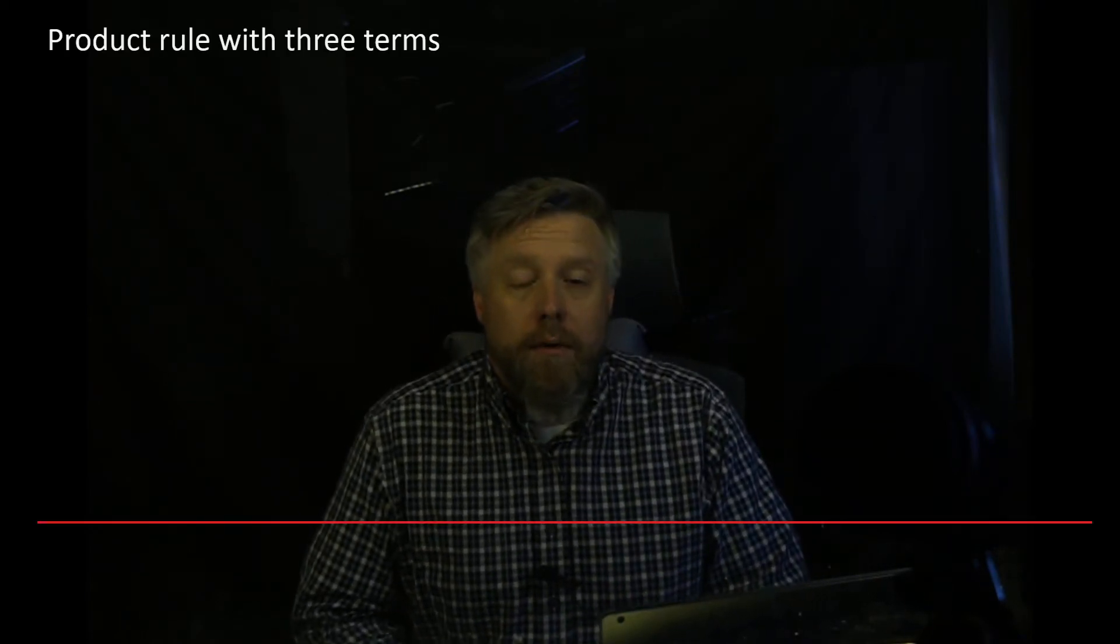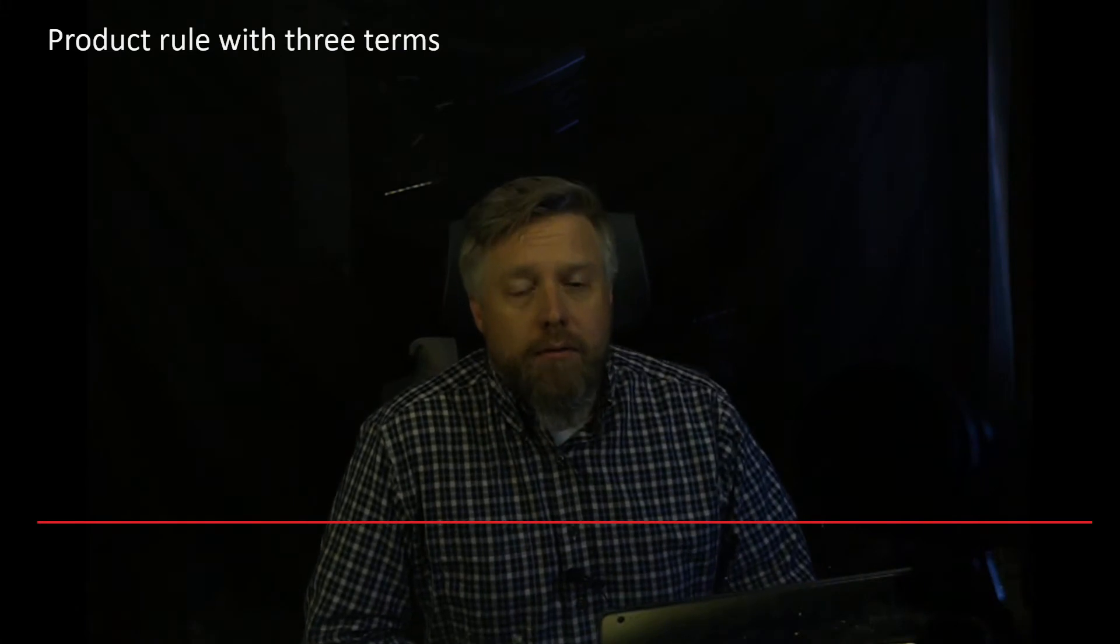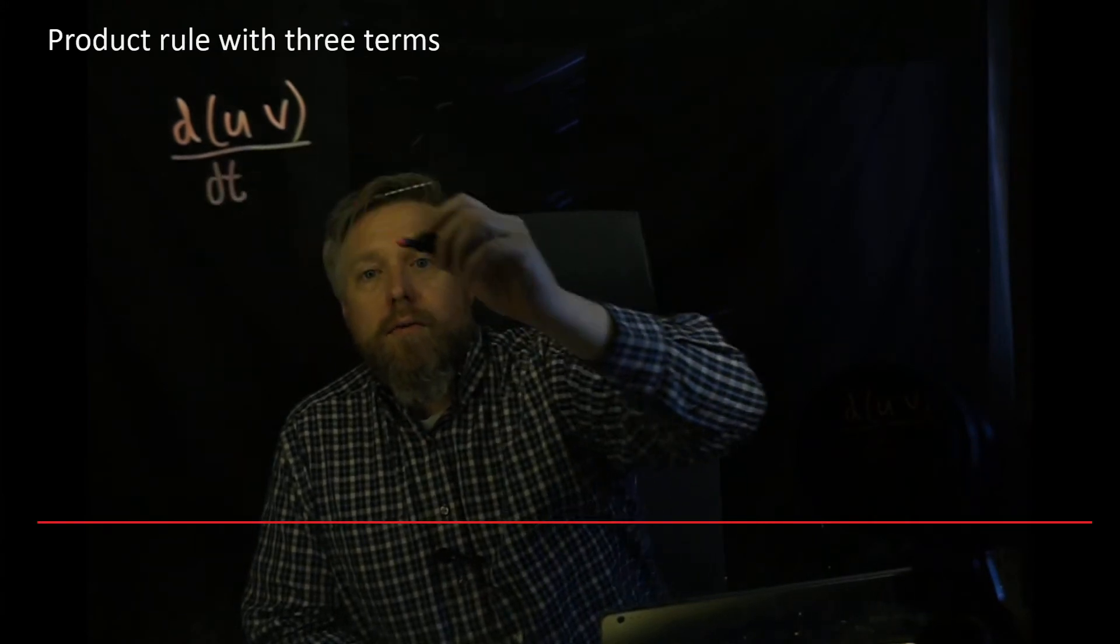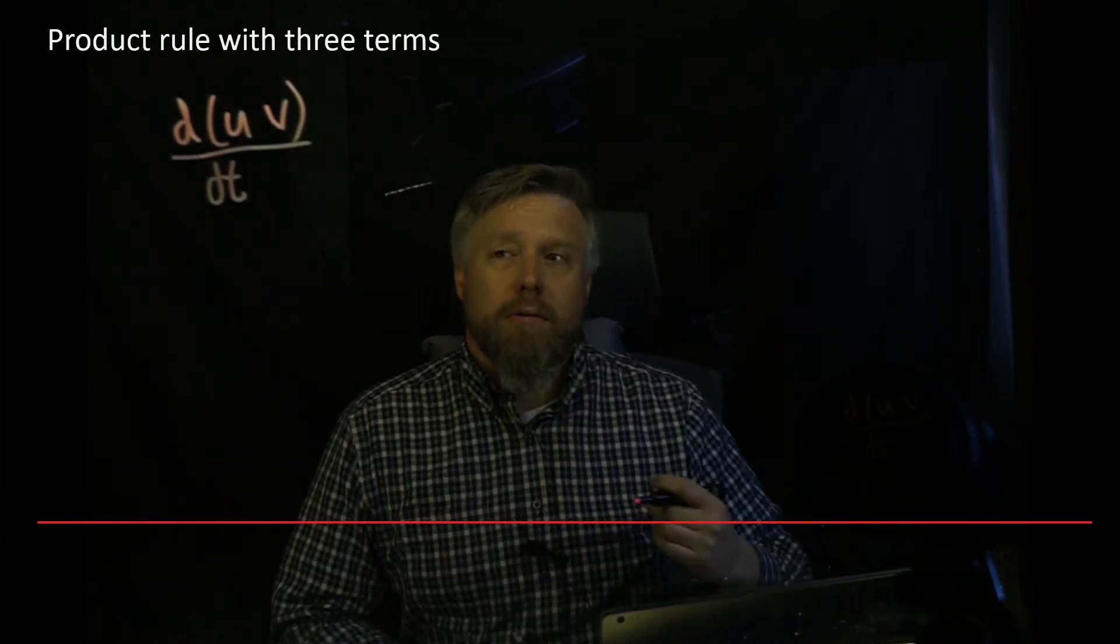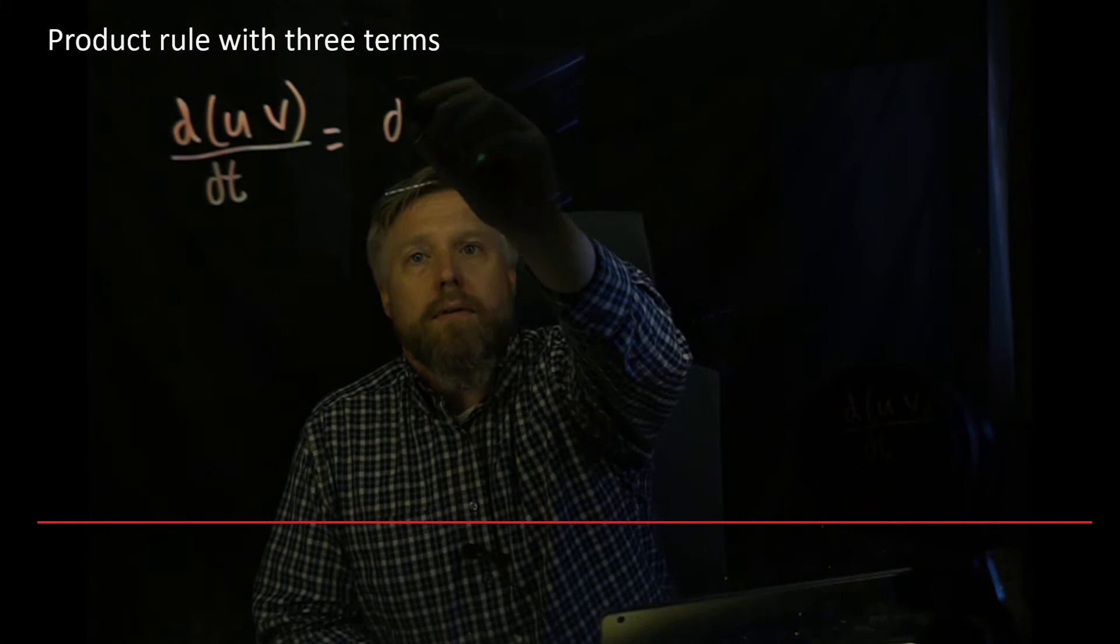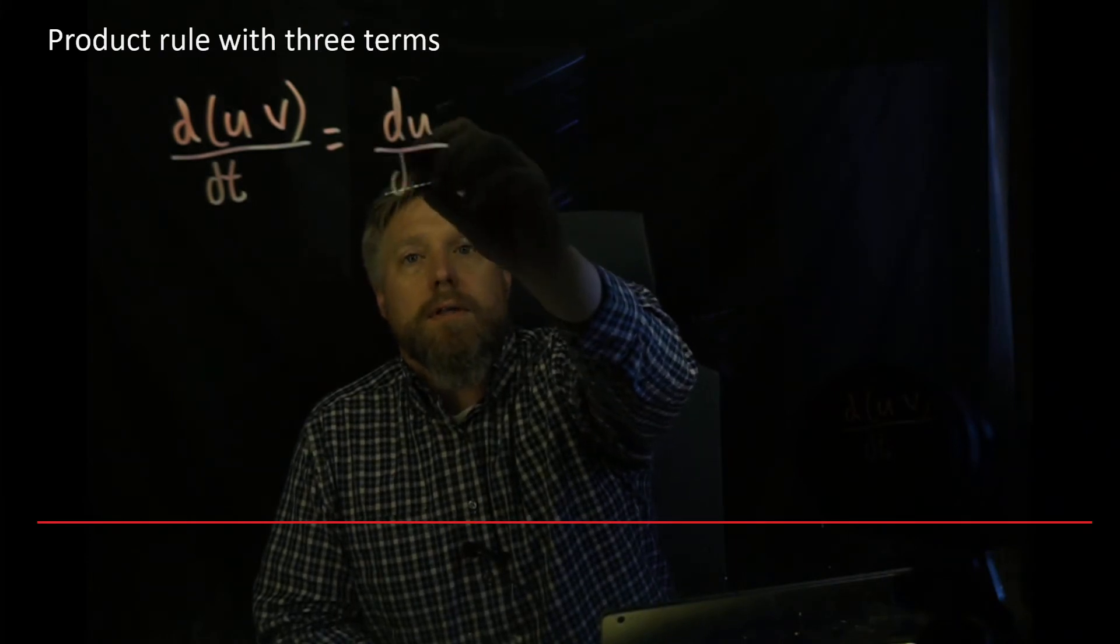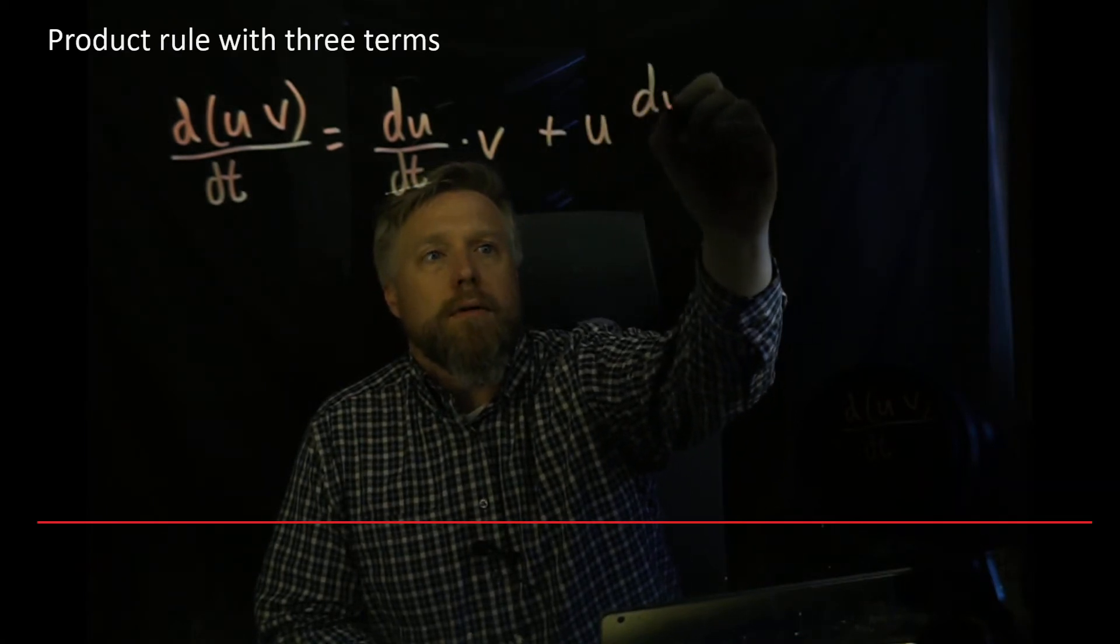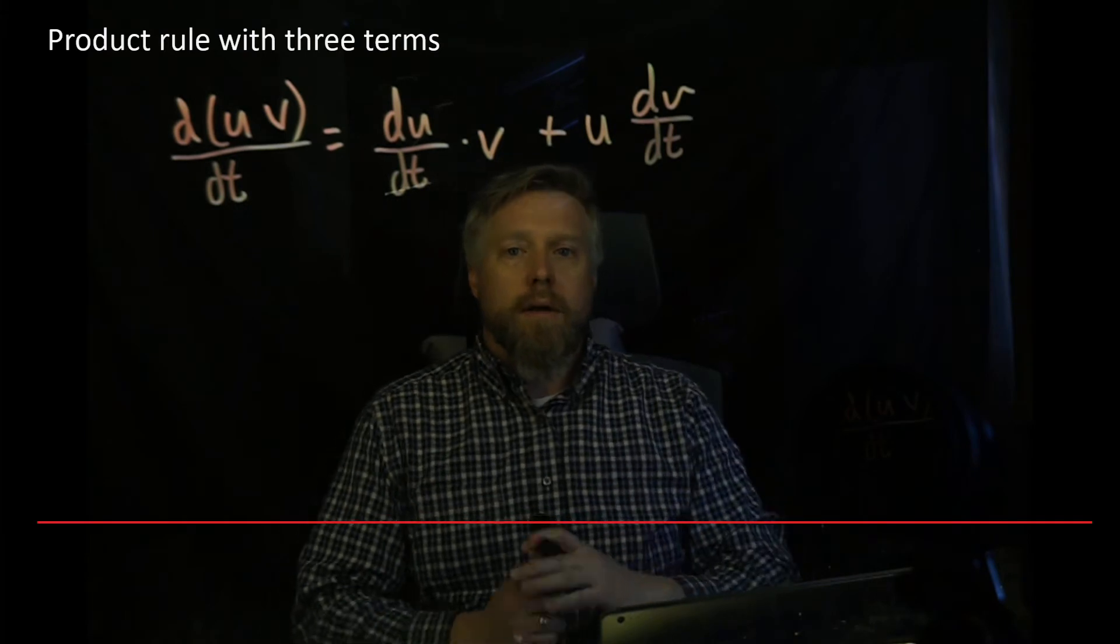The very first tool we need is the product rule, but we're going to use it for three terms. This may be something you've seen before. The product rule says that if you take the derivative of two functions, u times v, with respect to time—because that's what our derivatives are in dynamics—that's equal to du/dt times v plus u times dv/dt.